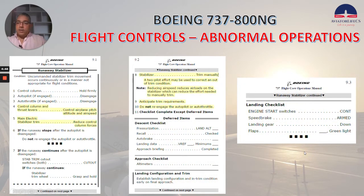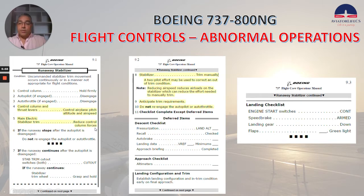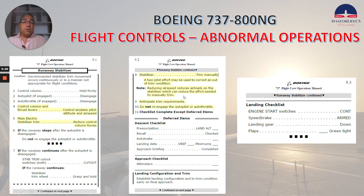If we go to the checklist itself, I highlighted a few things that changed. We have the runaway stabilizer memory items. It now says: control column and thrust levers control airplane pitch attitude and airspeed. Use main electric stabilizer trim to reduce control column forces, then trim stabilizer manually. A two-pilot effort may be used to correct an out-of-trim condition. Note: reducing airspeed reduces air loads on the stabilizer, which can reduce the effort needed to manually trim. Anticipate trim requirements. Do not re-engage the autopilot or autothrottle.